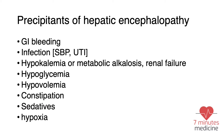One of the most important things in hepatic encephalopathy is to identify precipitants and treat them. Precipitants include GI bleeding, infection such as SBP (spontaneous bacterial peritonitis) or UTI, hypokalemia, metabolic alkalosis, renal failure, hypoglycemia, hypovolemia, constipation, sedatives, and hypoxia. It is very important to identify and treat these precipitants as soon as possible.